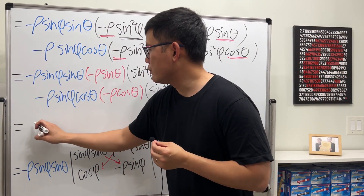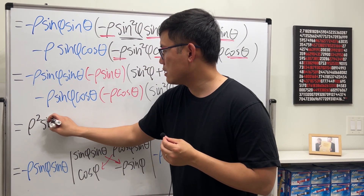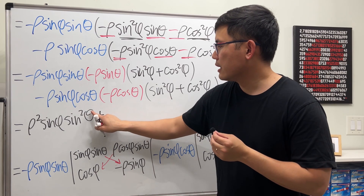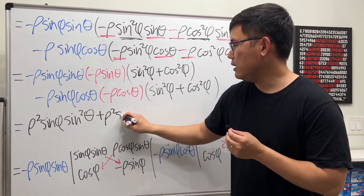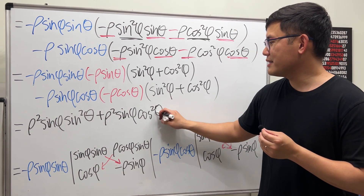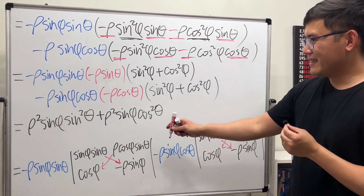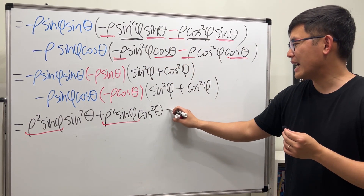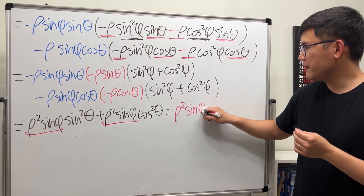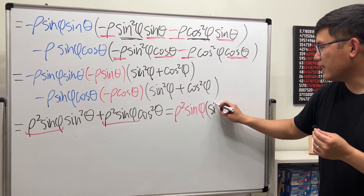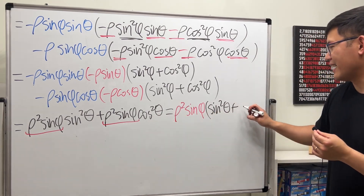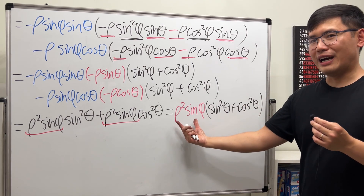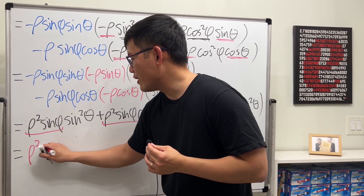Multiplying out: the first part gives ρ²sinφ·sin²θ, and the second part gives ρ²sinφ·cos²θ. Now we can factor out ρ²sinφ from both terms, giving ρ²sinφ·(sin²θ + cos²θ). And again sin²θ + cos²θ = 1, so this is just ρ²sinφ.